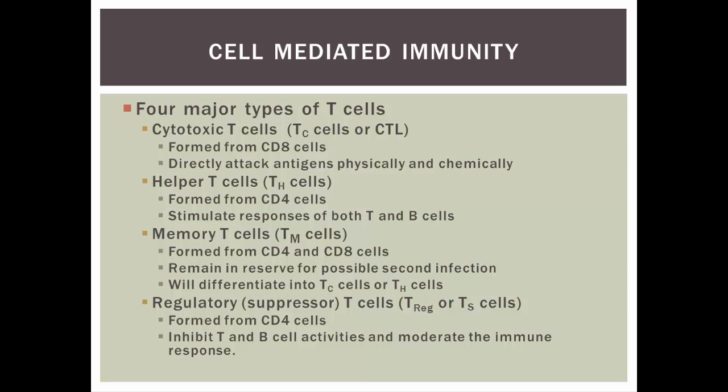Let's look at the major categories of T-cells. First, there are cytotoxic T-cells, which come from CD8 cells. When CD8 cells become activated, they become cytotoxic T-cells. Cytotoxic T-cells are in charge of directly attacking antigens and physically and chemically altering them so they don't do us any harm. You can think of these as the infantry in our war on pathogens.